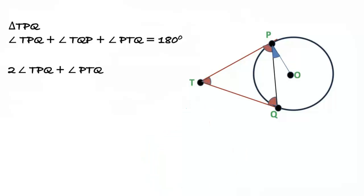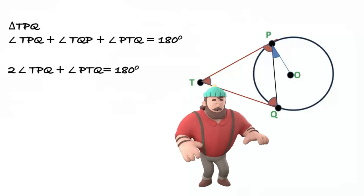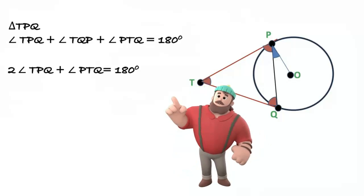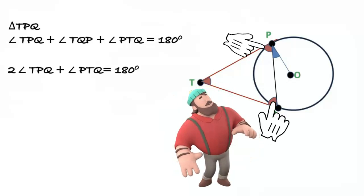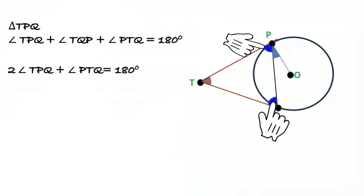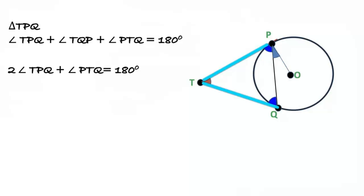Since triangle TPQ is isosceles and the angles opposite equal sides are equal, we get 2 times angle TPQ plus angle PTQ equals 180 degrees. Therefore, angle PTQ equals 180 minus 2 times angle TPQ.